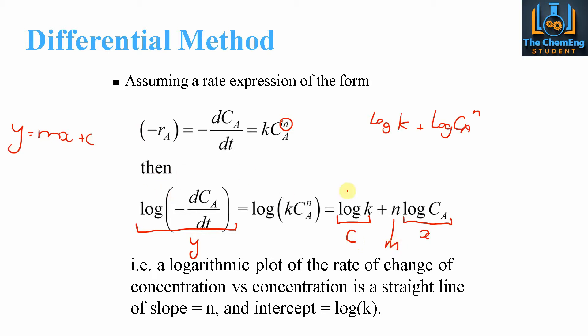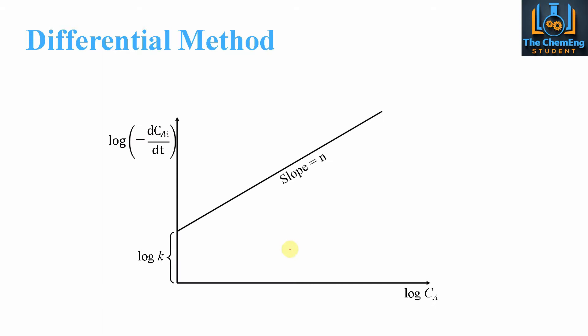When we plot this versus this, we end up with something that looks like this. Here we can see this is our X axis, so this was the log CA. This was our log minus dCA over dt.